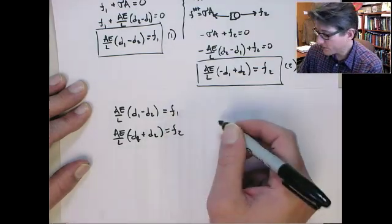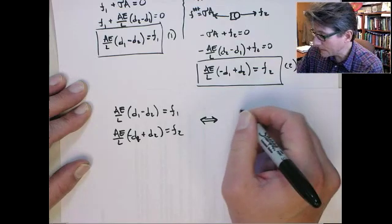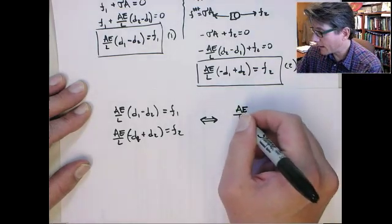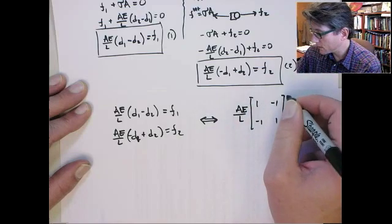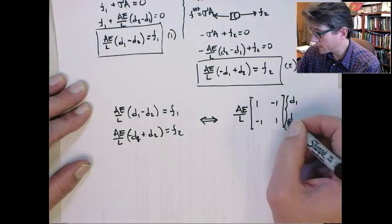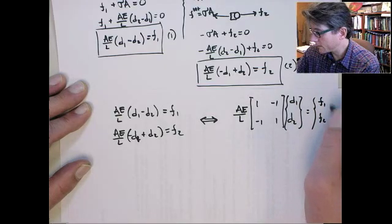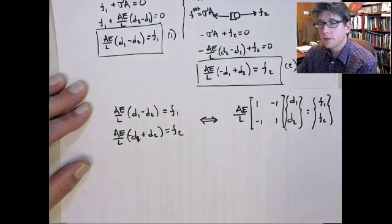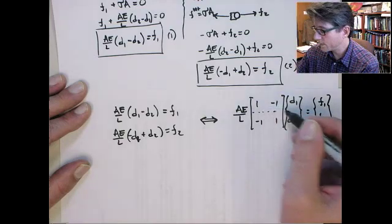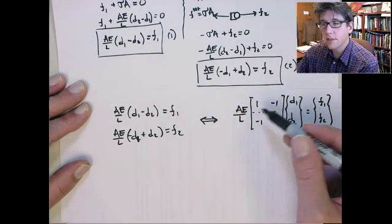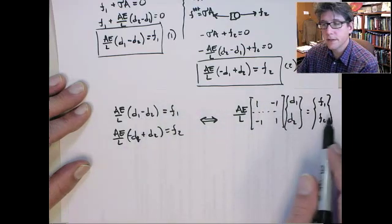This I can write in matrix form. So these are equivalent. So this is the same as writing AE on L, 1, minus 1, minus 1, 1, times D1, D2 equals F1, F2. So you can see that these two equations are the same. So this first row is equation 1, D1 minus D2 times AE on L is equal to F1.